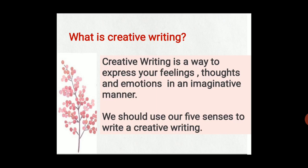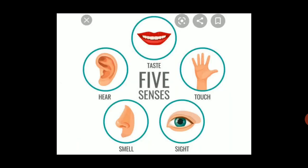If you want to write creative writing, you should use your five senses. These five senses are taste, hearing, touch, smell and sight. Whatever you see, hear, smell, taste and feel, you can write those things. You should use your eyes, ears, nose, tongue and skin — meaning feeling — and then you can write a very effective and impactful creative writing.